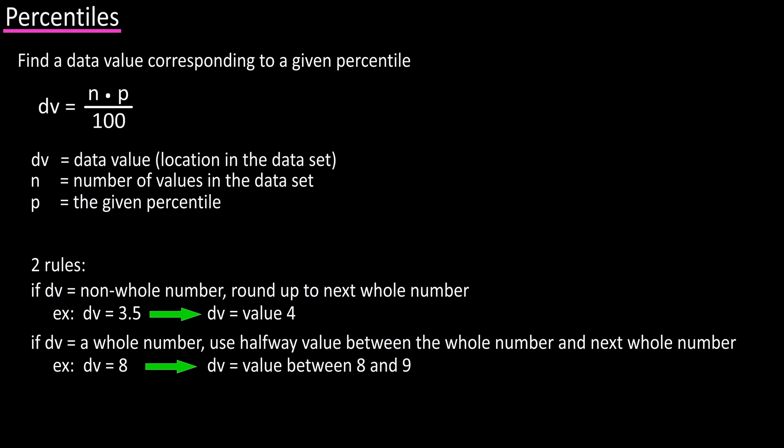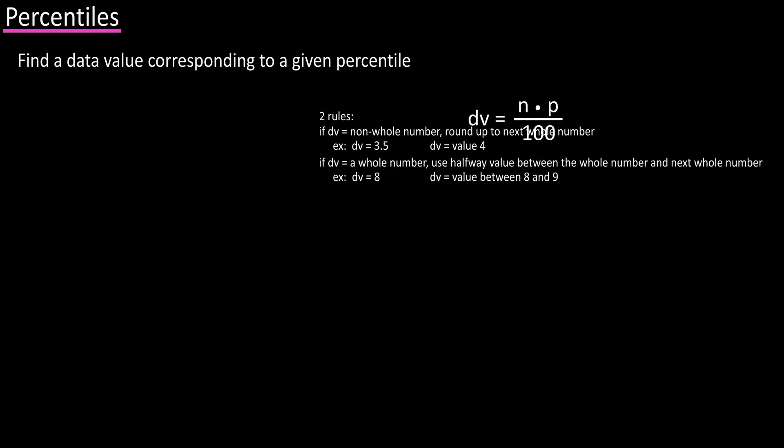Or if the formula does result in a whole number, use the halfway value between the resulting whole number and the next whole number. For instance, if the formula produced the number 8, use the halfway value between 8 and 9. Let's do an example for each of these.